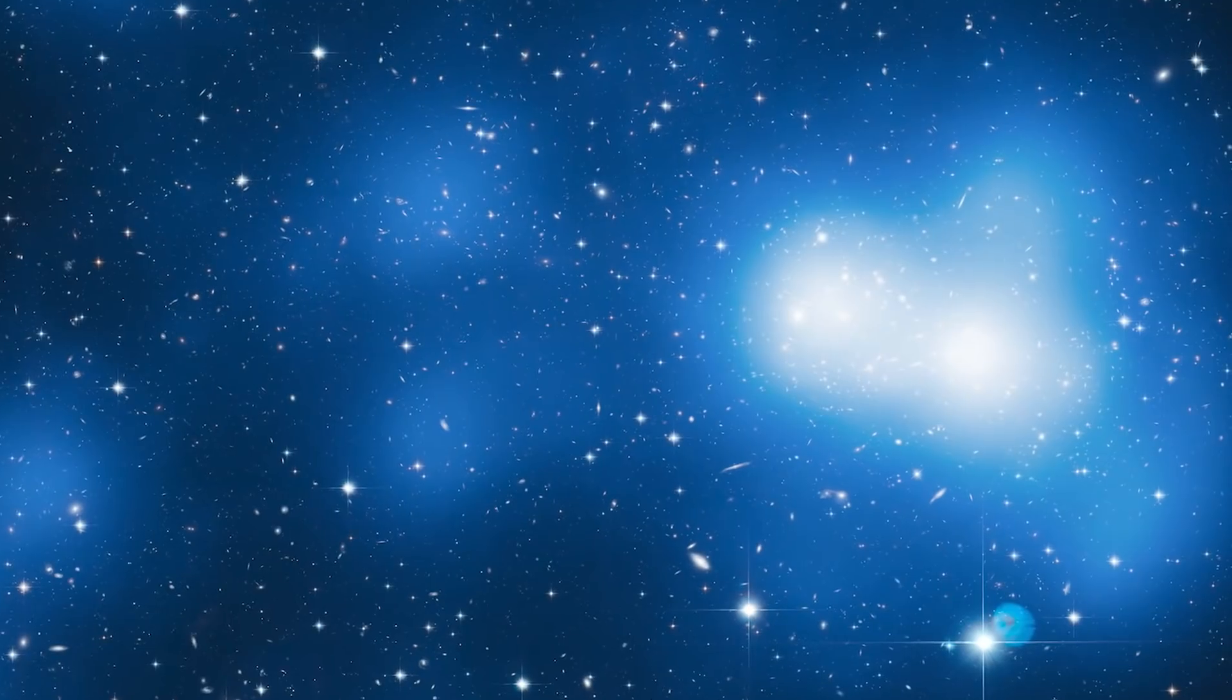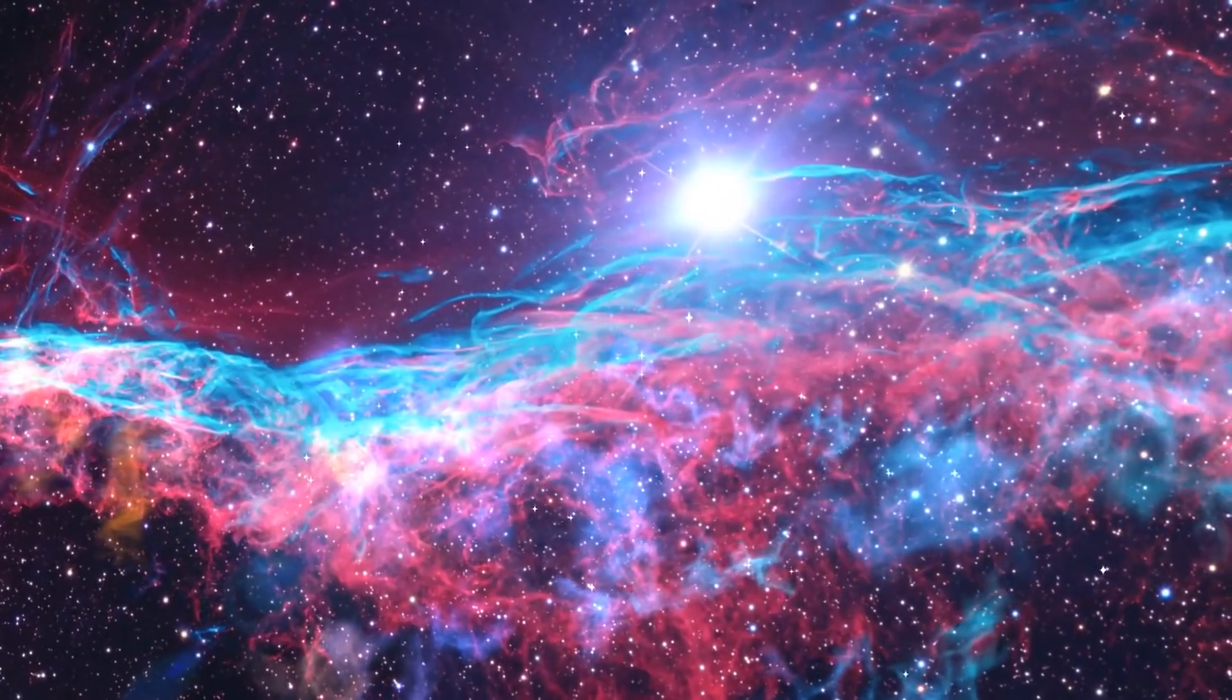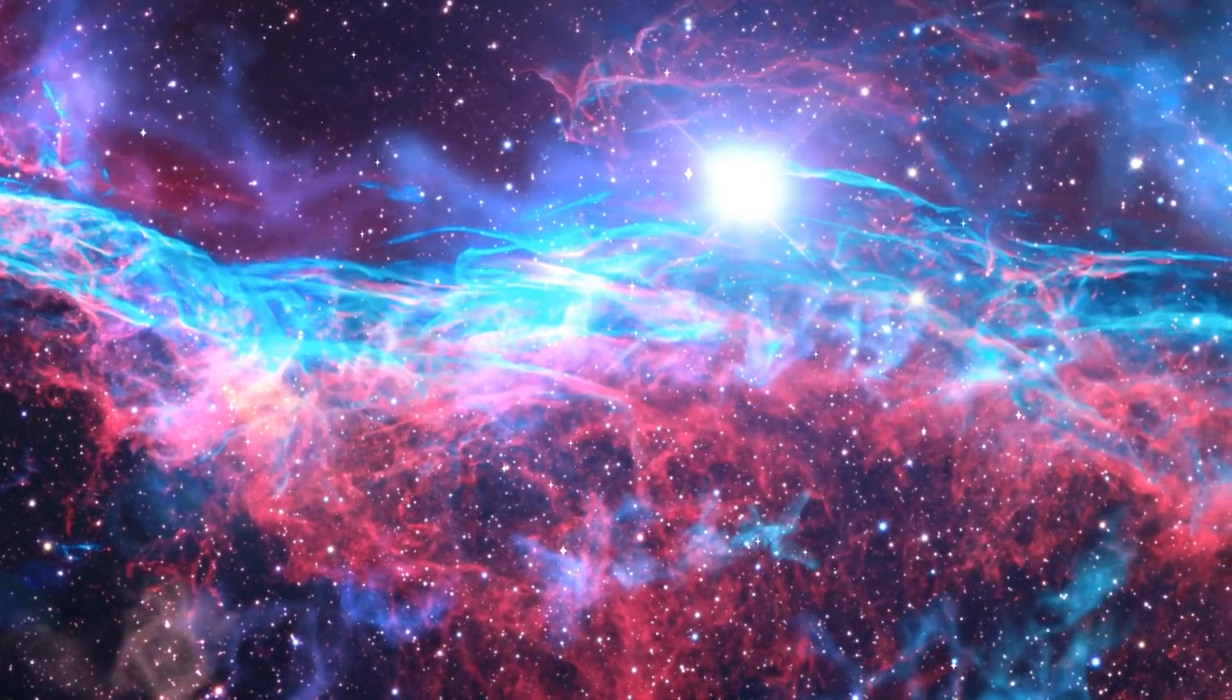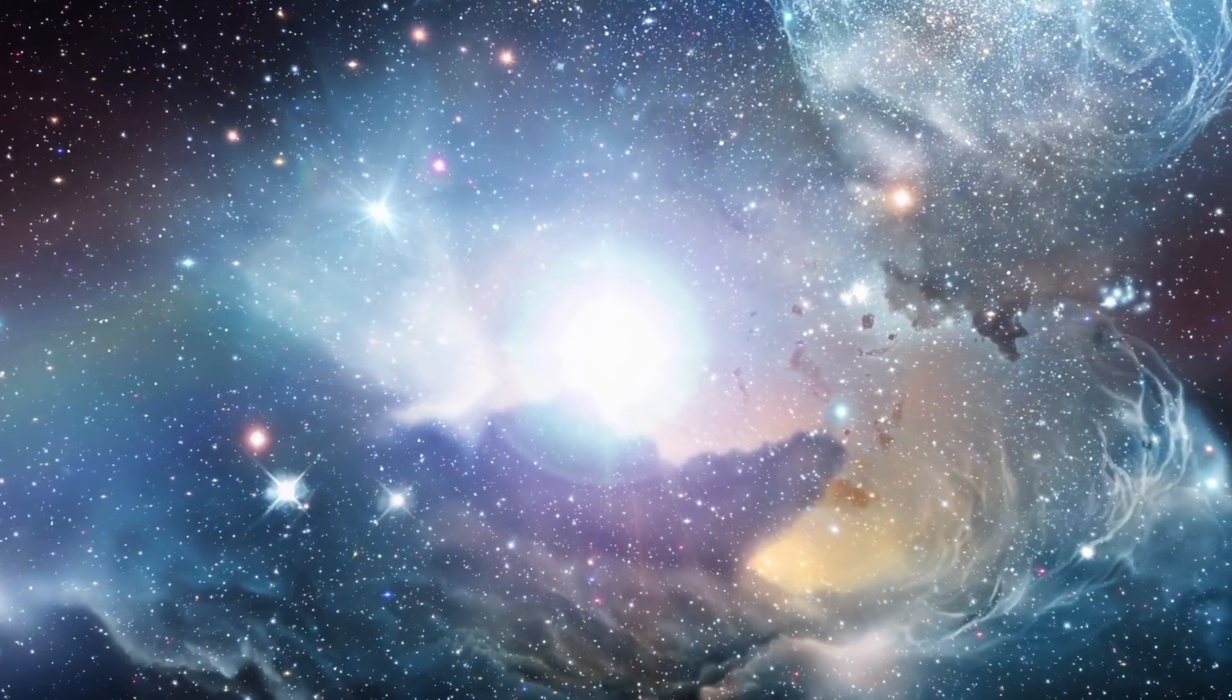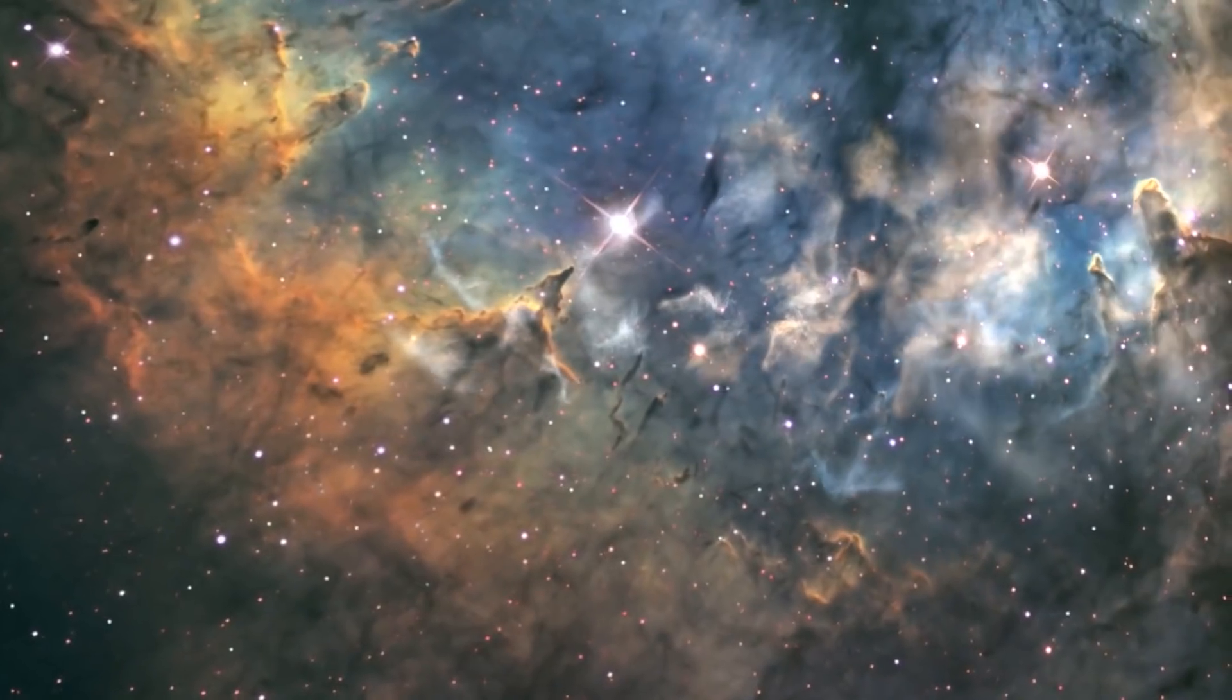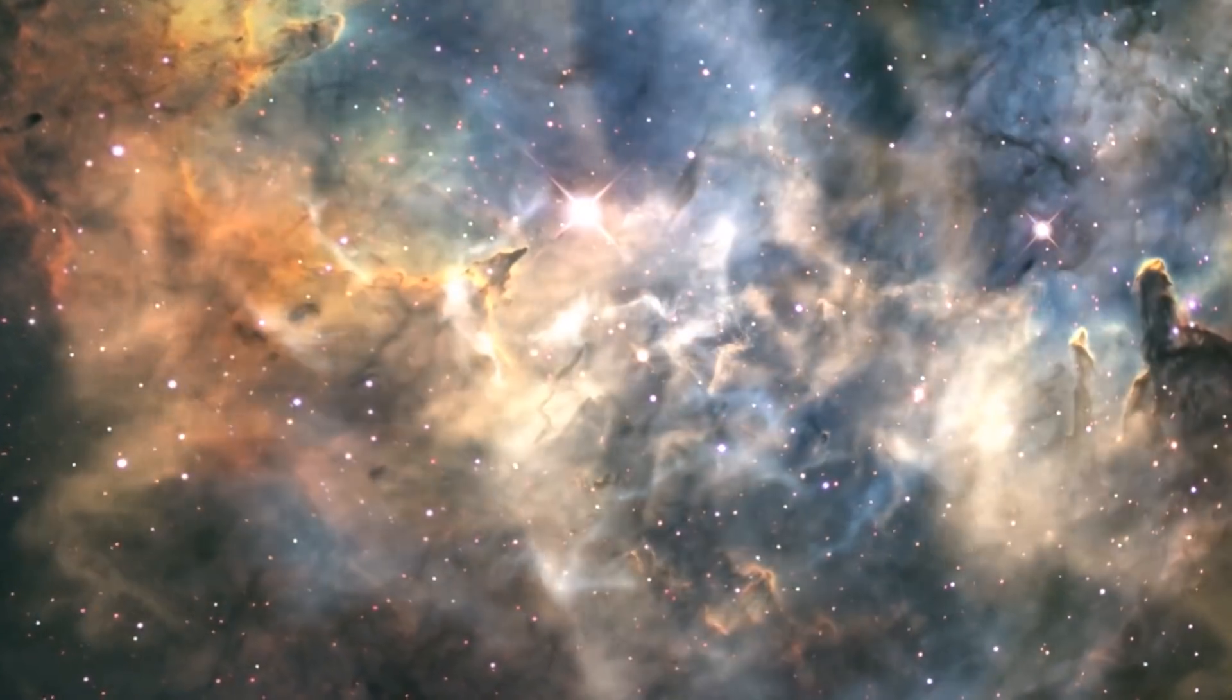And in terms of what is the biggest thing we've ever seen in the universe, that would be the Hercules-Corona-Borealis Great Wall. So just how big is the Hercules-Corona-Borealis Great Wall? 10 billion light-years across! No, you didn't hear that wrong. And if you're curious how that compares to the observable universe at large, the known universe is 93 billion light-years across. Which means that the Hercules-Corona-Borealis Great Wall is basically one-tenth the size of the known universe. That's huge!